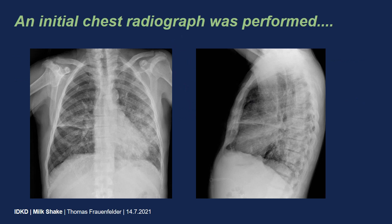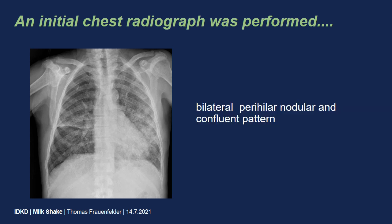When he arrived, an initial chest radiograph was performed. This chest radiograph showed bilateral, perihilar nodular configuration and confluent pattern with ground glass opacities and consolidations. These were diffusely distributed over both lungs, a little bit more on the left side.